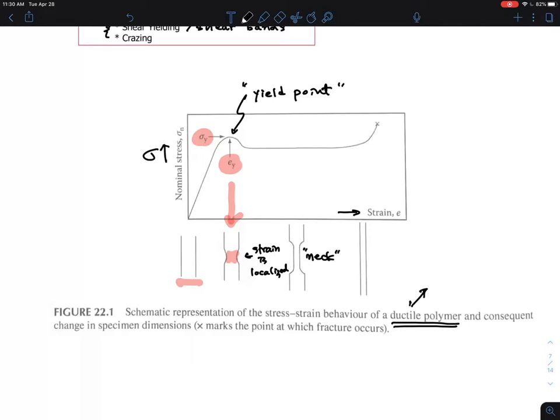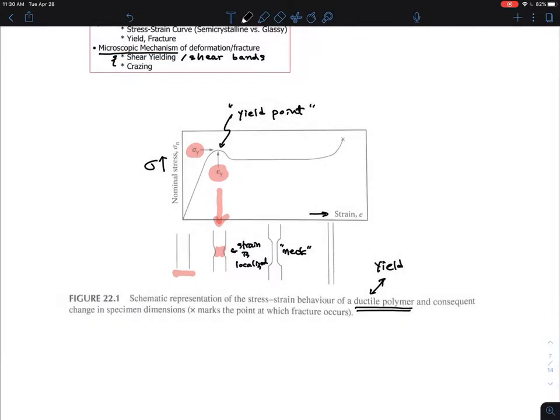And this is a signature of the ductile polymer, where you have a yield stress. So ductile polymer is you are seeing the yield, yield point, yield behavior. This is a signature of the polymers. And this is pretty typical for the semi-crystalline polymers that you see.